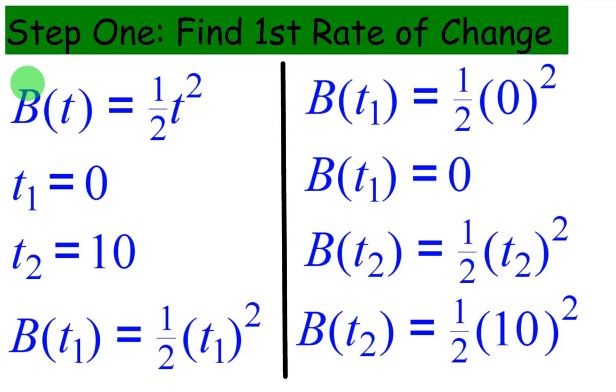So to find the first rate of change, we will just find the instantaneous since it's just one value. Actually, no, we'll go ahead and find the average rate of change. Sorry. So t1 and t2 is 0 and 10 because we're finding average rate of change from 0 to 10.